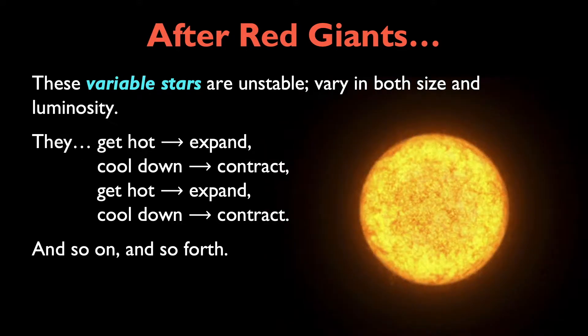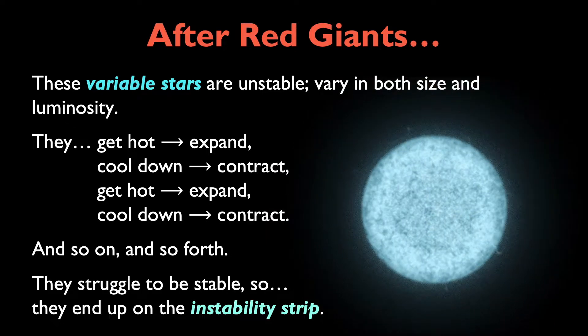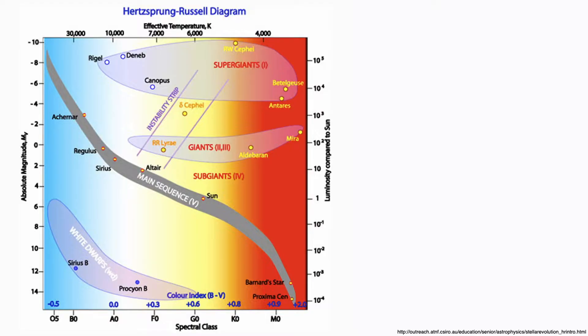These stars struggle to be stable, so they end up on the instability strip. Here is the instability strip on the HR diagram. This is what we mean when we say stars end up on the instability strip. They're constantly experiencing variations in temperature and luminosity, so they keep moving around in this region of the HR diagram.